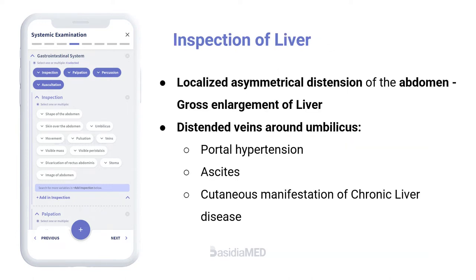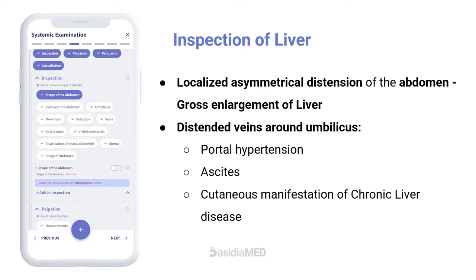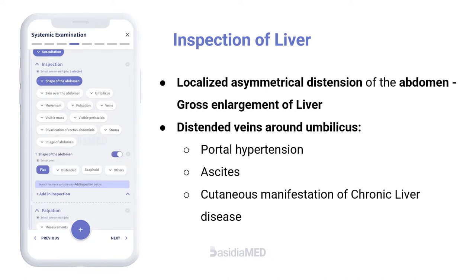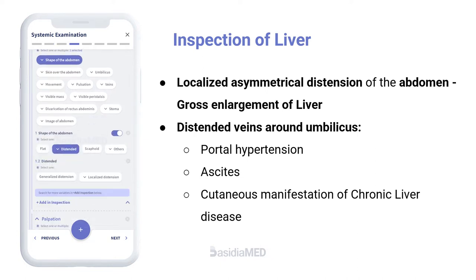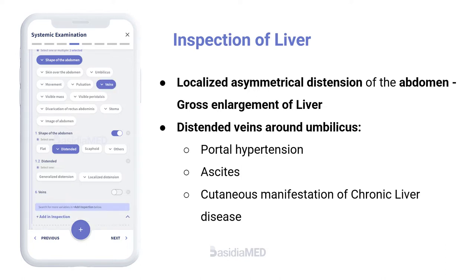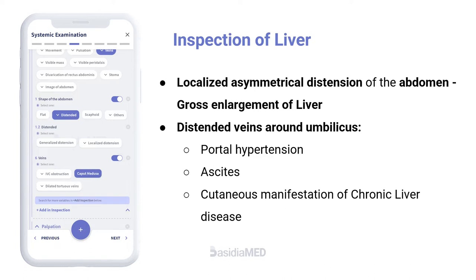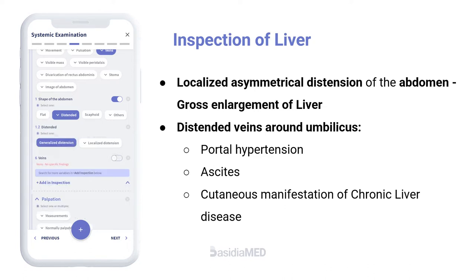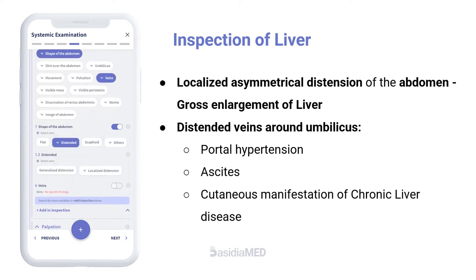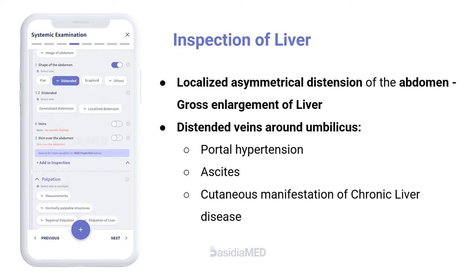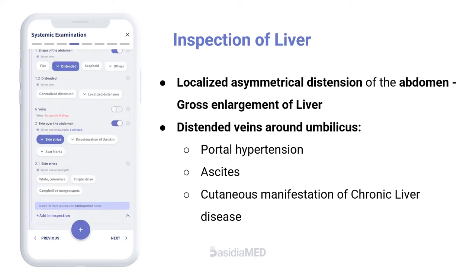Inspection of the Liver. Begin with the general inspection of the patient. Localized asymmetrical distension of the abdomen is due to gross enlargement of the liver. The presence of distended veins around the umbilicus signifies portal hypertension. Look for ascites and cutaneous manifestations of chronic liver disease.